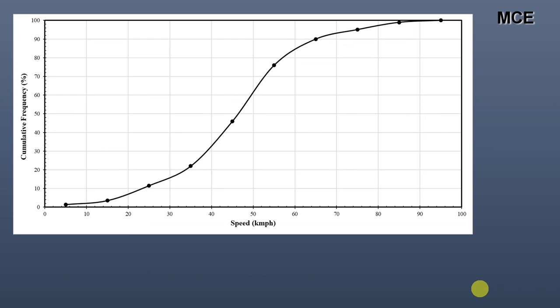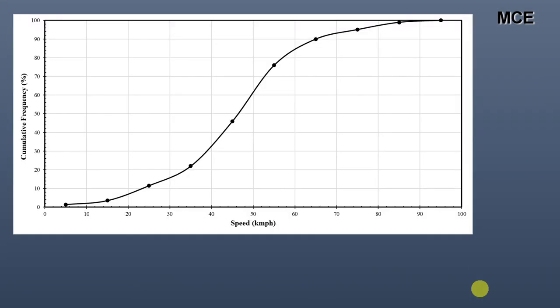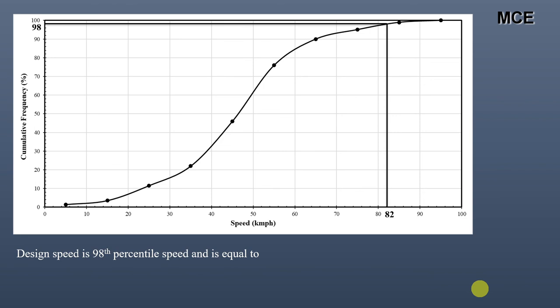For the upper speed limit — the 85th percentile speed — locate 85% on the vertical axis, draw a horizontal line to the curve, then a vertical line down. The point where it touches the horizontal axis is your upper speed limit, which is 60 kilometers per hour. For design speed — the 98th percentile speed — do the same from 98% on the vertical axis, and the result is 82 kilometers per hour.